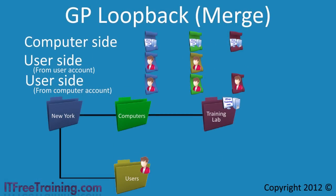The other group policy loopback processing mode is merge mode, which is often used with remote desktop services. Merge mode is used when you want the regular user settings to be applied but want the option to override those settings if required. In a remote desktop session, you may want the user to have access to settings like mapped drives and printers configured in group policy, but you may want to override other settings — for example, locking down the desktop by removing the control panel and unneeded shortcuts. The goal is to allow the user to have their regular settings applied while having the option to add or overwrite settings to ensure the computer remains secure.